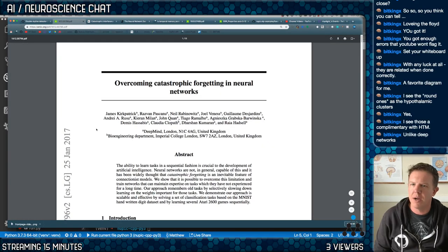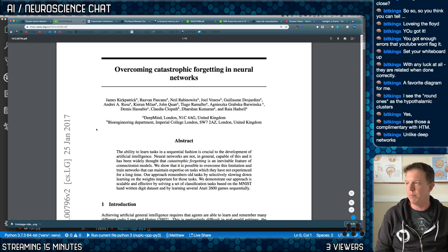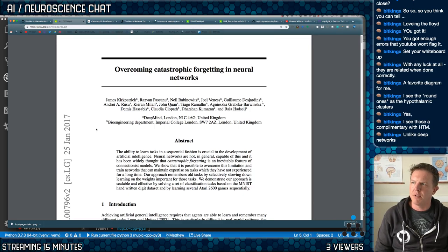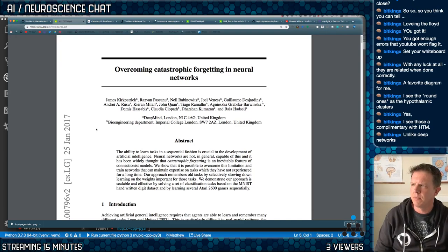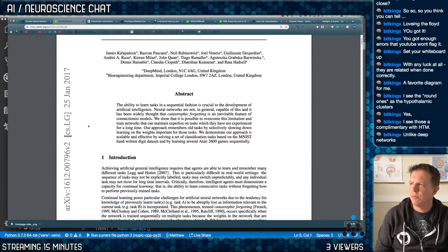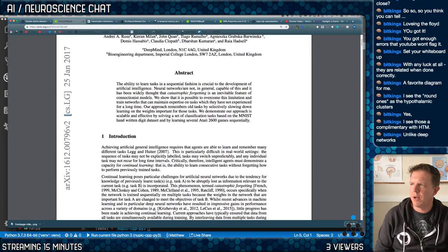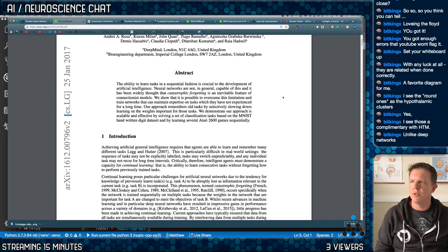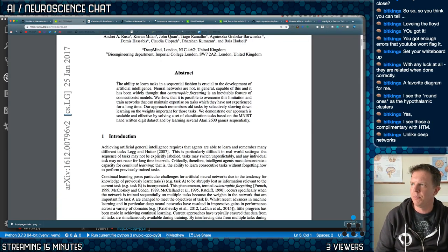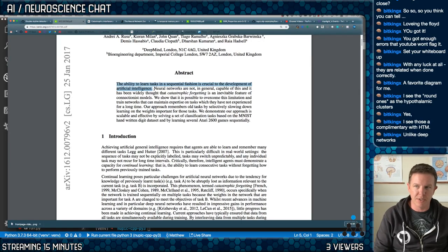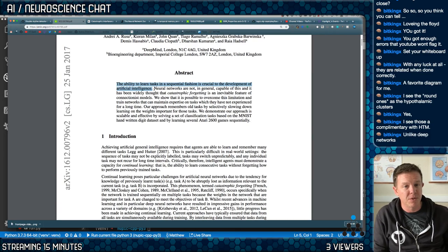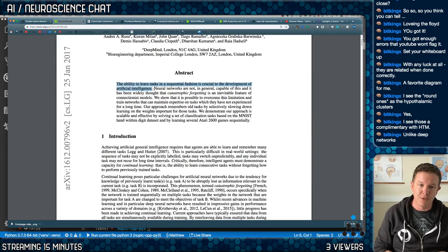But there's also techniques, like here is the DeepMind paper. I think this was a big paper about overcoming catastrophic forgetting in neural networks from 2016, 2017. So they're basically laying out the problem here that neural networks aren't generally capable of learning tasks in a sequential fashion. So that's a good point, a good thing to point out right off the bat. The ability to learn tasks in a sequential fashion is crucial to the development of artificial intelligence. I would absolutely agree to that.